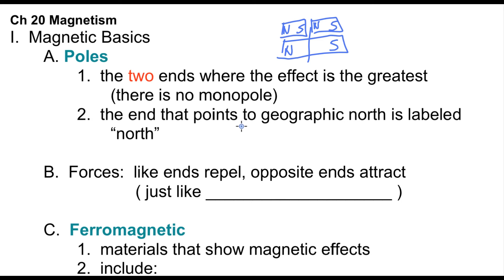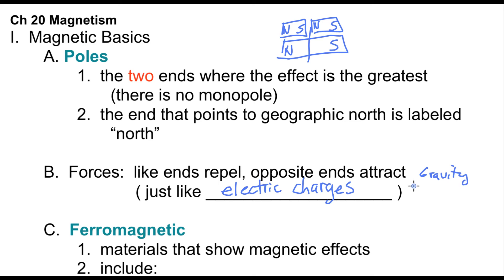Like ends repel and opposite ends attract — just like we've seen with electric charges. This is our third time encountering what I call unseen forces: first gravity, then electricity, and now magnetism. We're going to find out these two are very closely linked.